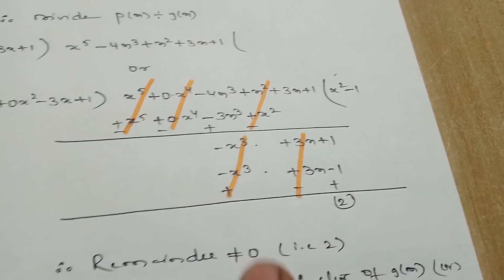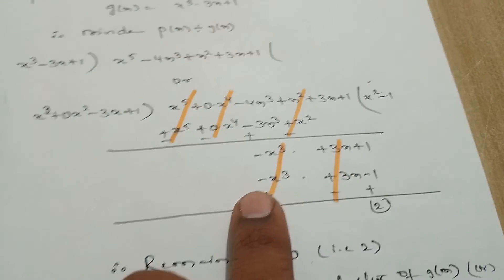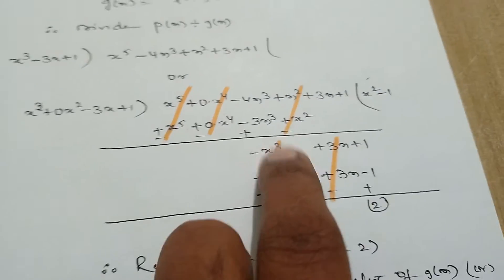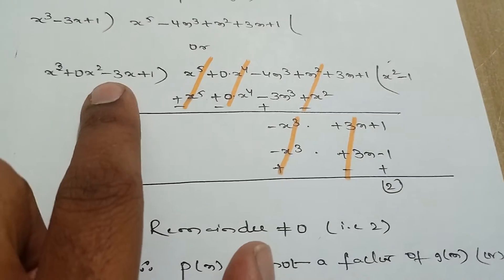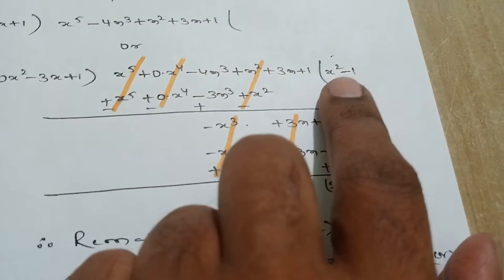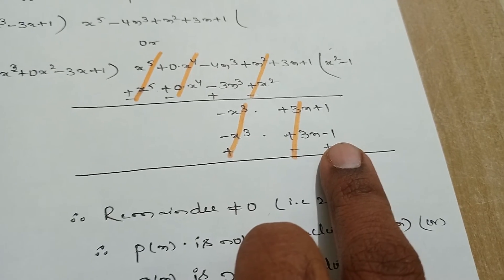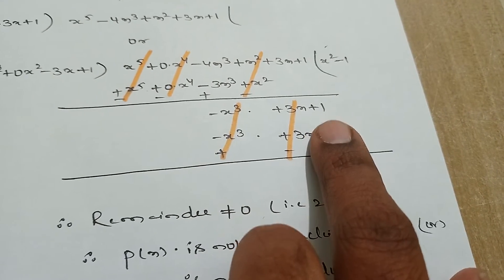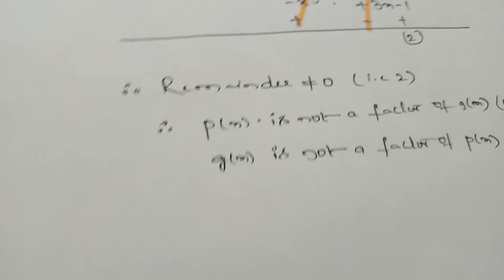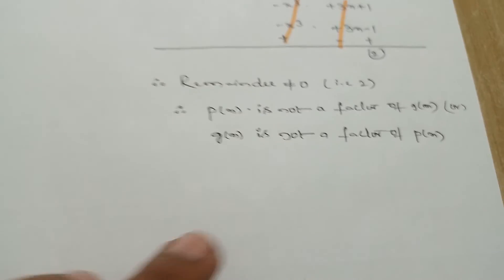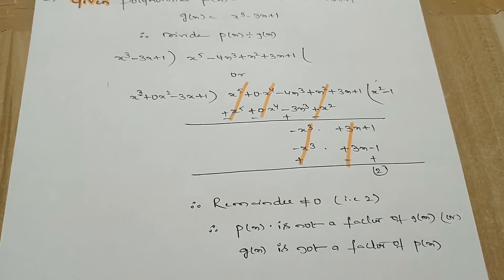Take down 3x and also +1. For x³, what we multiply to become -x³? We multiply by -1. x³ × (-1) = -x³. 0 × (-1) = 0. -3x × (-1) = +3x. 1 × (-1) = -1. Now by doing subtraction all terms cancel except the constant term. The remainder is 2, which is not equal to 0. Therefore we can say the given polynomials are not factors of each other, and g(x) is not a factor of p(x).